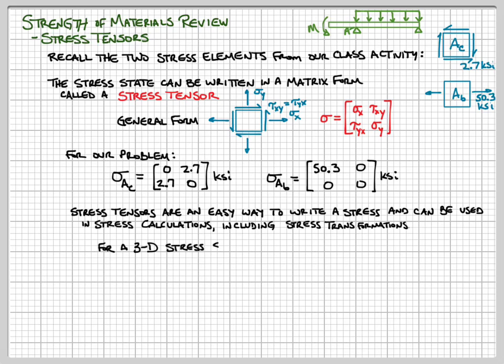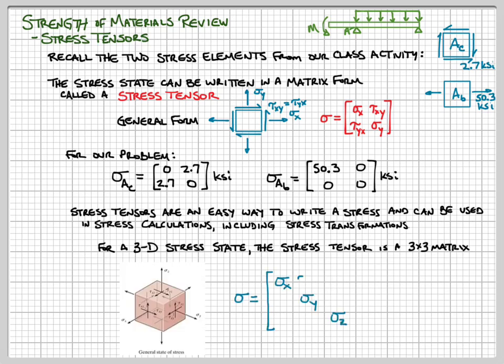For a 3D stress state we need to include additional components. In general, a 3D stress state has nine different stress components. The normal stresses sigma_x, sigma_y, and sigma_z go on the diagonal, and the shear stresses fill in the remaining spots, with their subscripts matching up on the opposite diagonals. That gives us the 3D stress state written in tensor form.